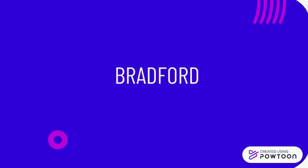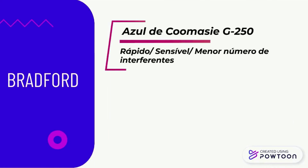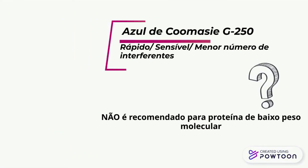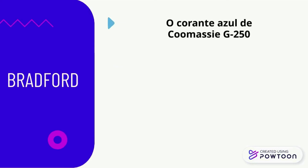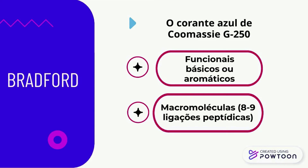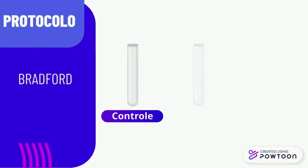Agora vamos falar sobre a metodologia de Bradford. O método de Bradford usa como base o corante azul de Coomassie G250, e possui vantagens como ser rápido e sensível, assim como sujeito a um menor número de interferências que o de Lowry. Porém, não é recomendado para proteínas de baixo peso molecular, pois o corante azul de Coomassie se liga aos grupos funcionais básicos ou aromáticos das proteínas, e para isso ocorrer, a proteína deve ter uma estrutura macromolecular — ou seja, de 8 a 9 ligações peptídicas, no mínimo.